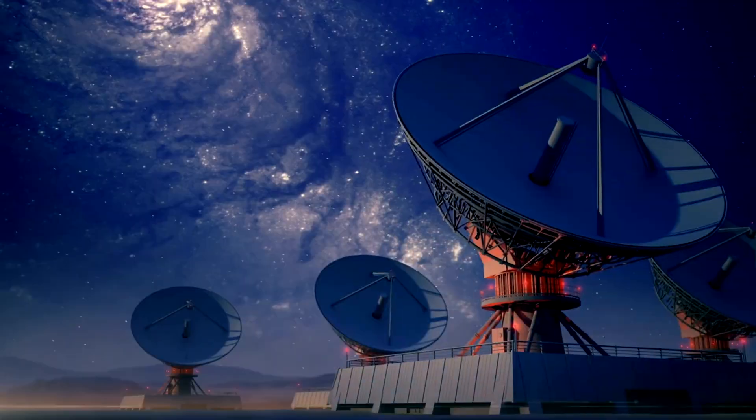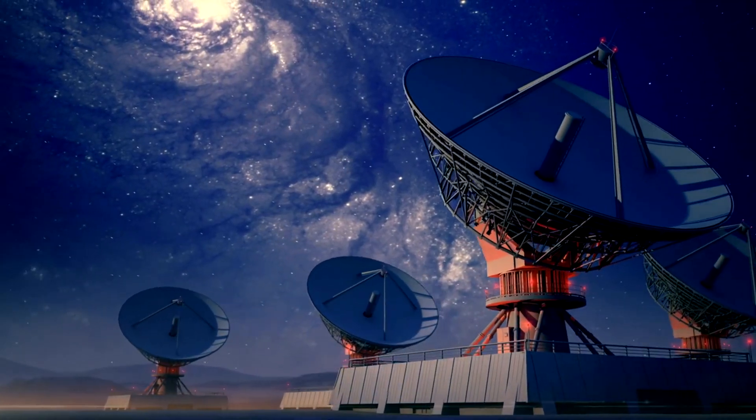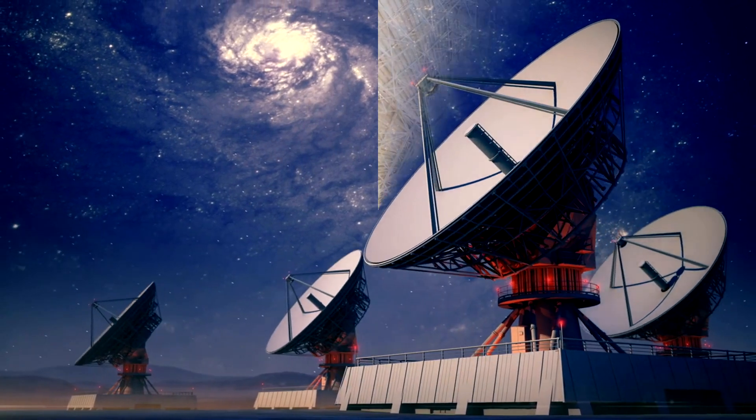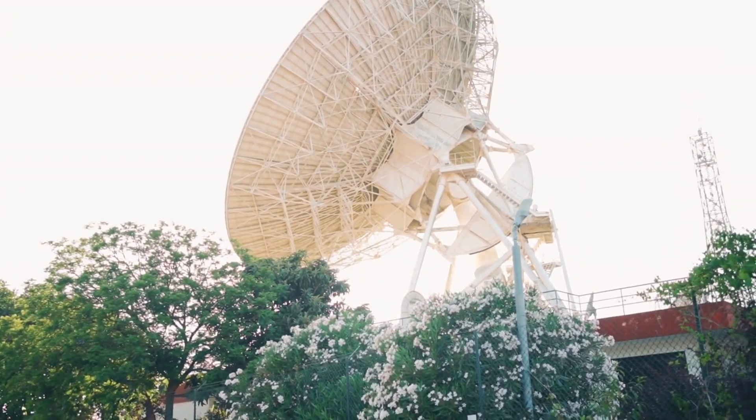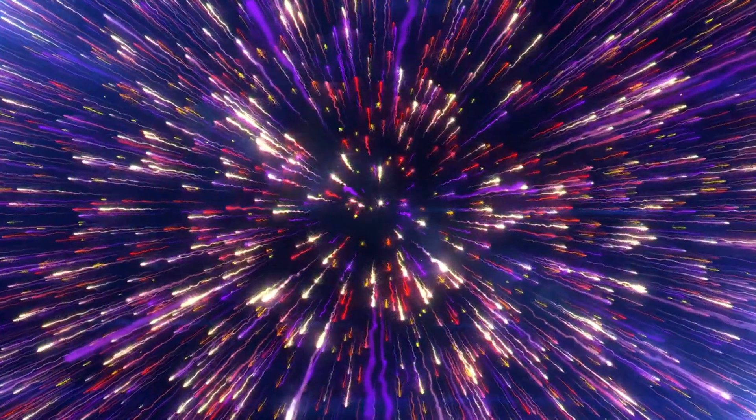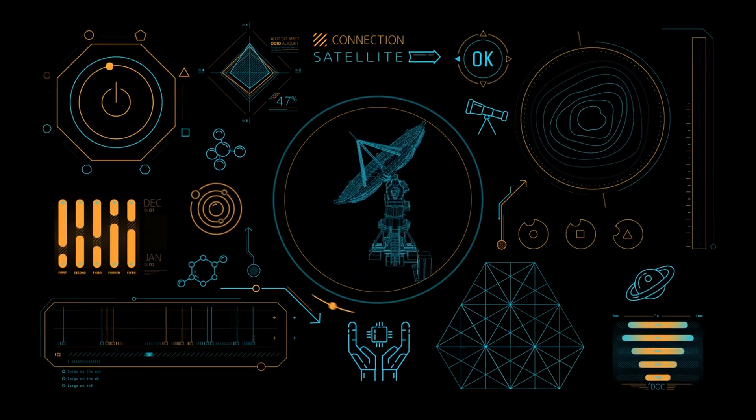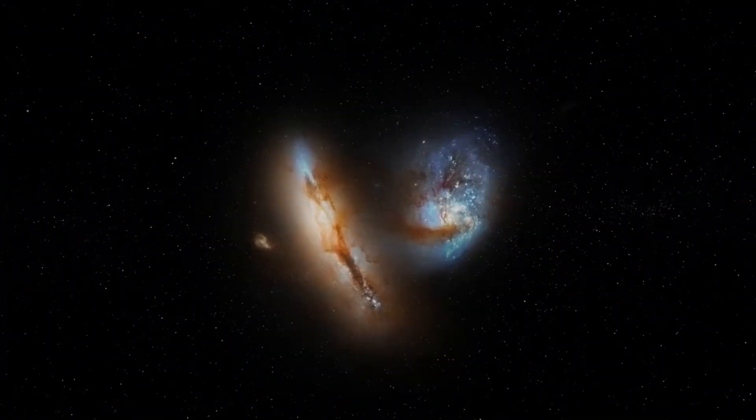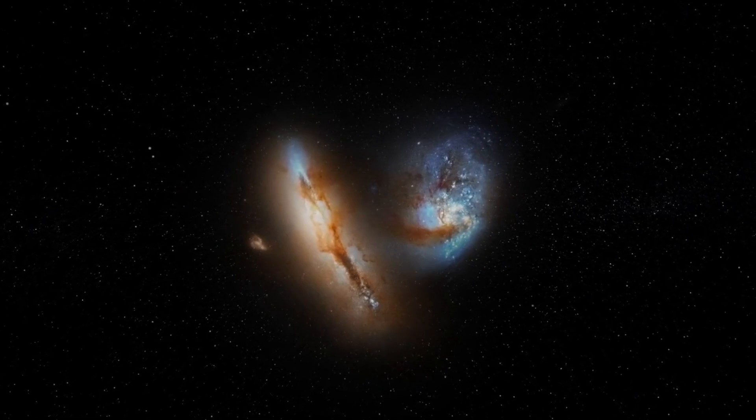The study of Abel 3667 is a collaborative effort that involves observations across multiple wavelengths, from radio to x-ray, using a variety of ground and space-based telescopes. This multi-wavelength approach is essential for capturing the full picture of the complex interactions at play. For instance, radio observations can reveal the presence of synchrotron radiation, which is emitted by high-energy electrons spiraling around magnetic fields, while x-ray observations provide information about the hot gas in the cluster. Together, these observations help to piece together the puzzle of what happens when massive galaxy clusters collide.